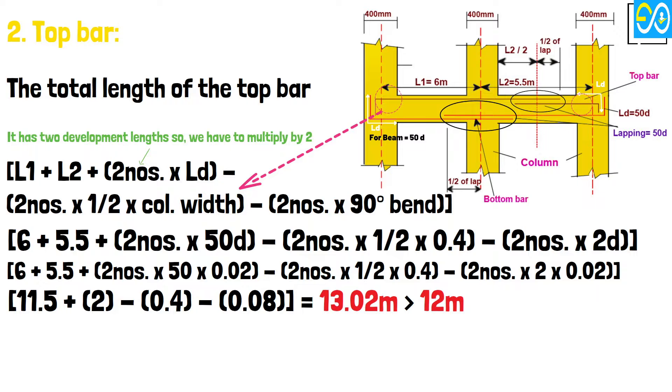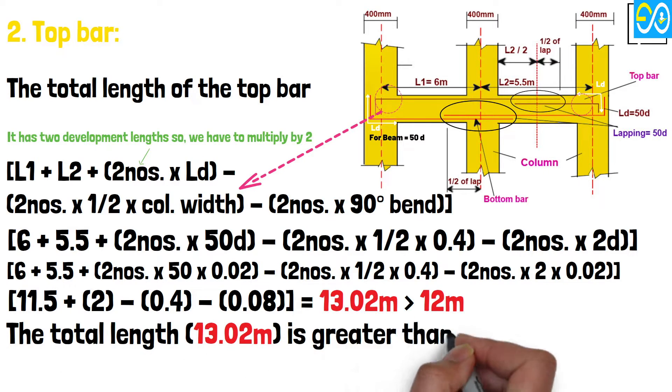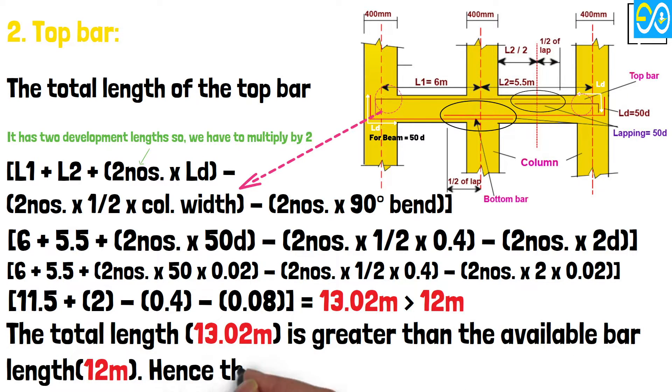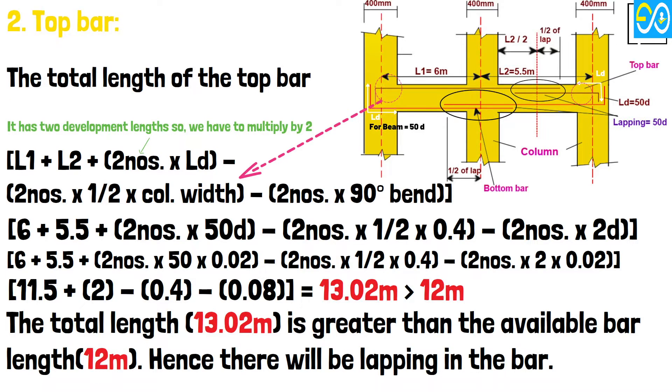The total length 13.02 meters is greater than the available bar length of 12 meters. Hence there will be lapping in the bar.